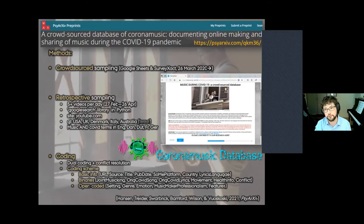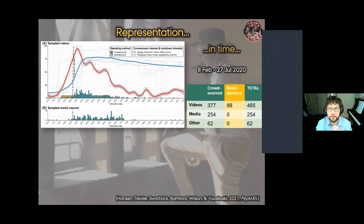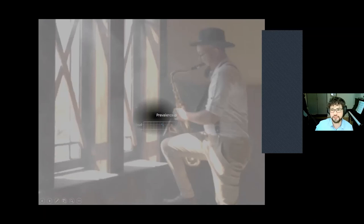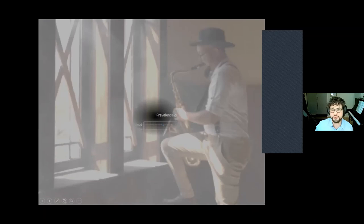First briefly looking at representation: here's the curve from before, the red curve is the Corona music interest. We see that we cover with our database supplemented with retrospective sampling the main period of Corona music interest both in terms of videos and media articles. It's a relatively small database, and we cover different countries with a huge over-representation of the US, UK, Italy, Denmark, Israel, Australia, but we do have representation from all around the world. You can access our data on GitHub and OSF and also access this very nice shiny app that we made where you can explore the different variables on your own.